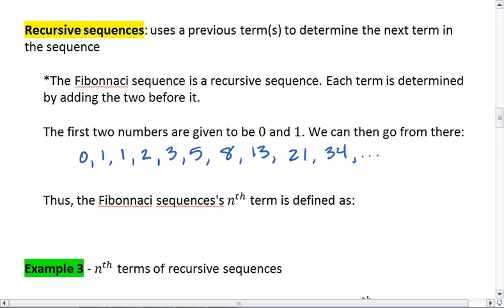Because to get to each term, I take the two before it and add them together. 0 plus 1 is 1. 1 plus 1 is 2. 1 plus 2 is 3. 2 plus 3 is 5. 3 plus 5 is 8, and so it continues. 5 plus 8 is 13. 8 plus 13 is 21, and so on and so forth.